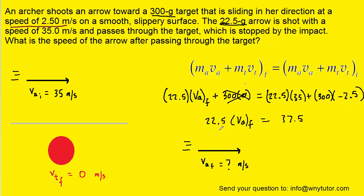And then finally, we can divide both sides by 22.5. And we see that the final velocity of the arrow is approximately 1.67 meters per second.